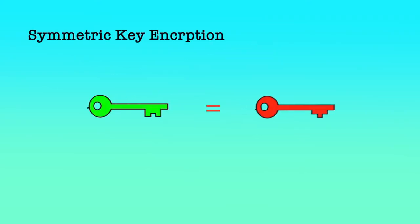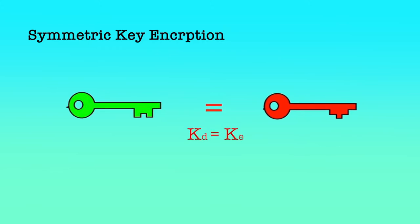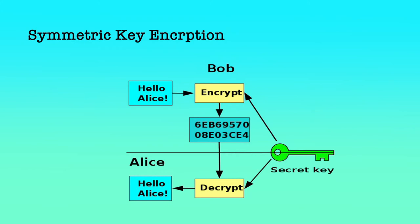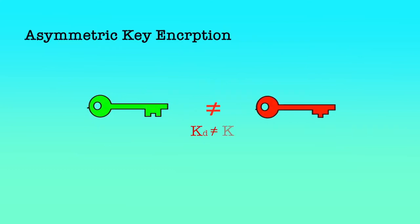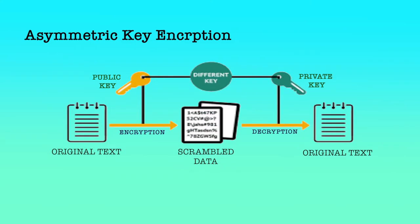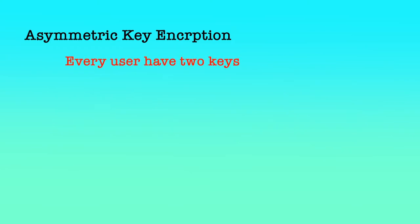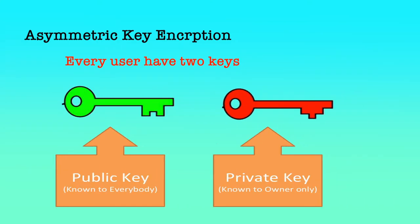When both encryption and decryption keys are the same, i.e. KE equals KD, it is known as private key communication or symmetric key encryption. In symmetric key encryption, both parties have the same key, and either of them accidentally exposing the key can break the security of the cryptosystem. There are cryptosystems where KE is not equal to KD, i.e. both encryption and decryption keys are different. These cryptosystems are known as public key cryptography or asymmetric key encryption. In asymmetric key encryption, every user has two keys — one public key and one private key. The private key is known to the user only, and the public key of all users is published and known to everyone.